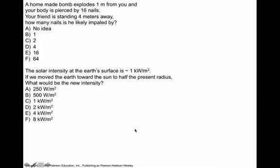A similar question. The intensity of the sun on Earth's surface is 1 kilowatt per square meter. That means a square meter gets a thousand watts of light and heat on it. What if we move the Earth to half the distance? What would be the new intensity of sunlight?